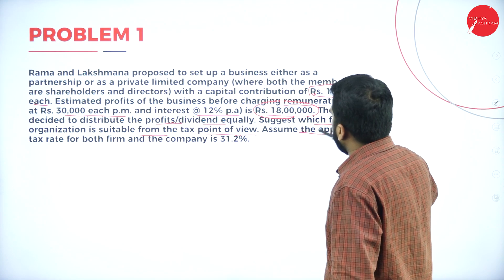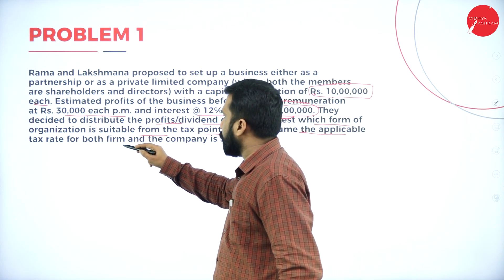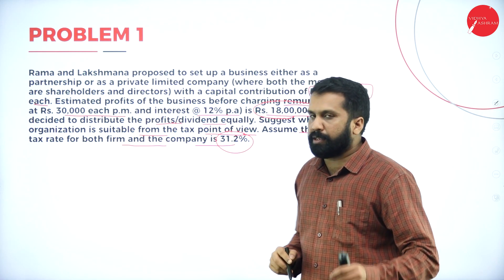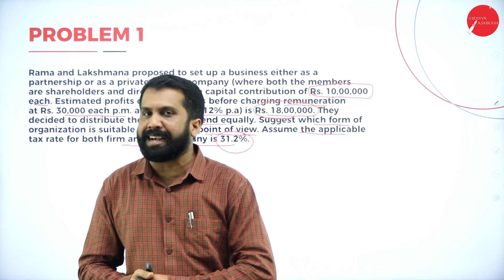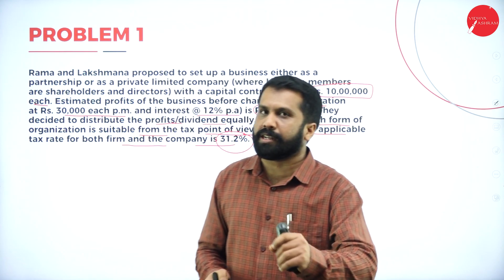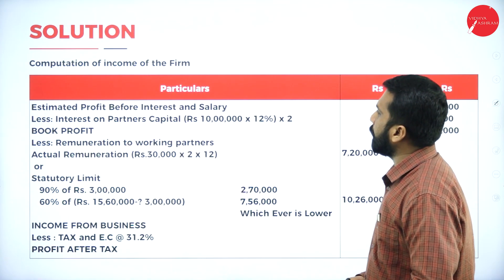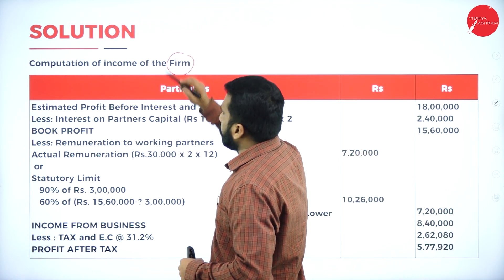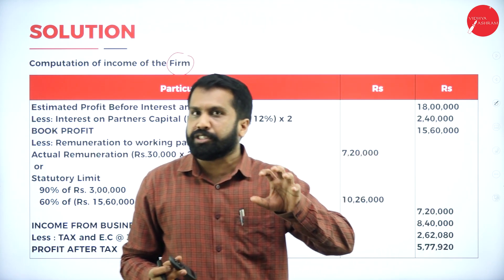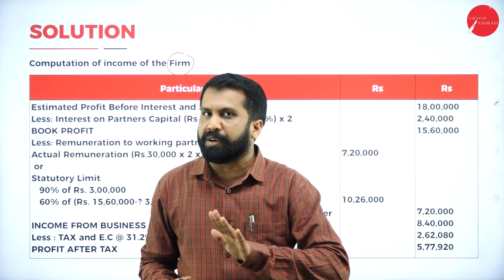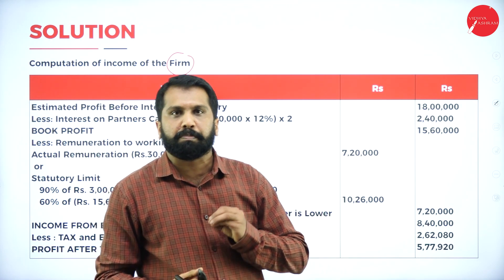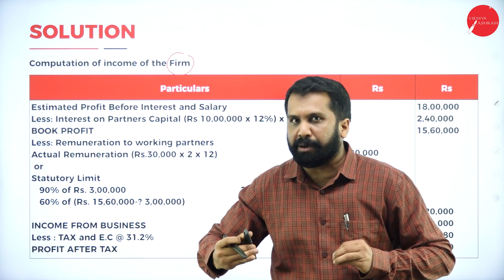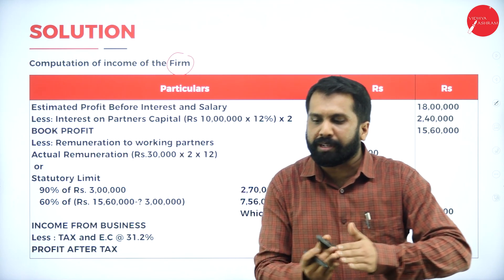They decided to distribute profit or dividend equally. Suggest which form of organization is suitable from the tax point of view. Assume the applicable tax rate for both the firm and the company is 31.2%. We are now comparing whether partnership is better or company is better.